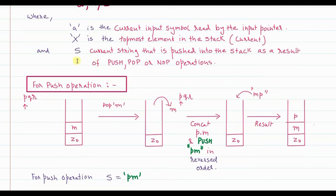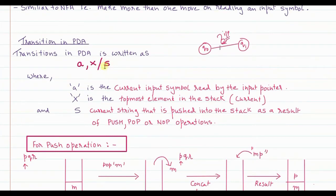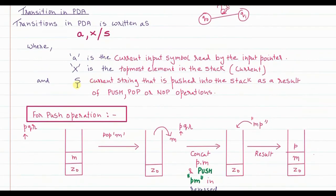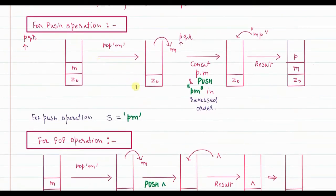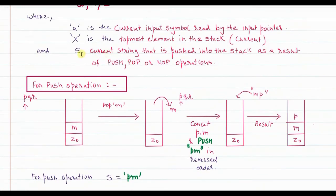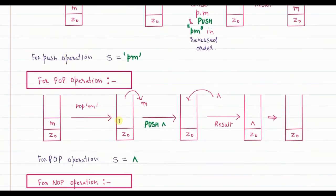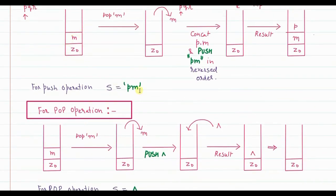So for the push operation, the string 's' that is written after the slash is 'pm' — meaning 'p' concatenated with the previously popped element 'm'. This is the string pushed onto the stack as a result of the push operation. The 's' component represents what string is ultimately pushed.